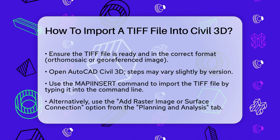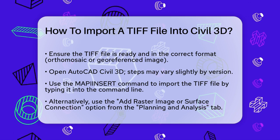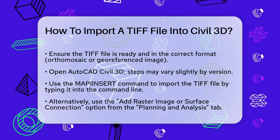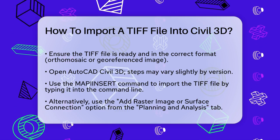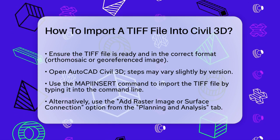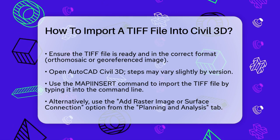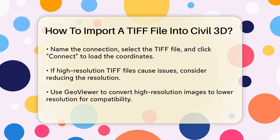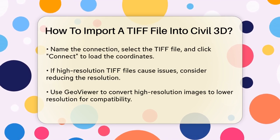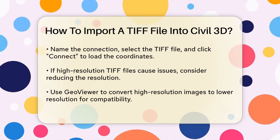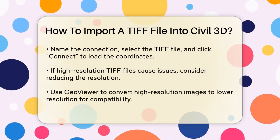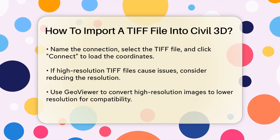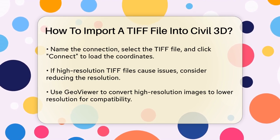One common method to import a TIFF file is using the MAPIINSERT command. Type MAPIINSERT in the command line and then select the TIFF file from your folder. This command allows you to insert the raster image directly into your Civil 3D drawing.